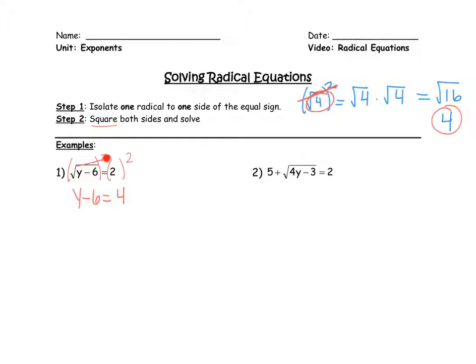So that applies to this problem here. The square and the square root cancel each other out and I'm left with what's on the inside. Then we just solve — we add 6 to both sides and this answer is y equals 10. Now I seem to have forgotten the third step, so if we could please write it in: Step 3 is to check.